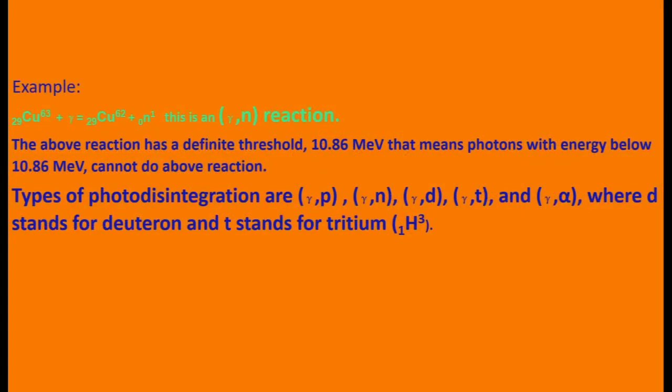You can see in the example, X-ray or gamma ray photon interacts with a copper nuclei on the left side of equation. And on the right hand side of equation, a neutron is ejected leaving behind an isotope of copper.